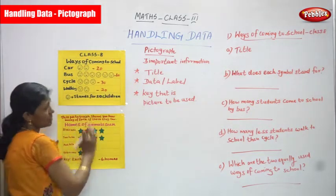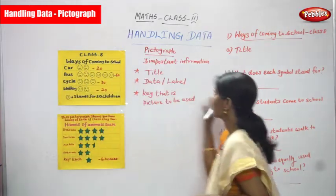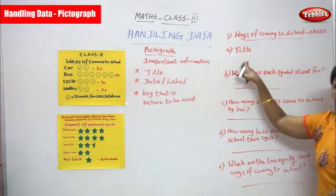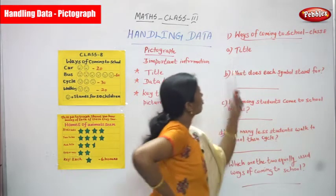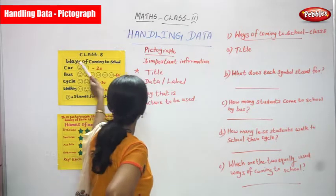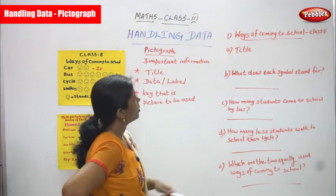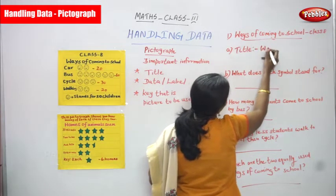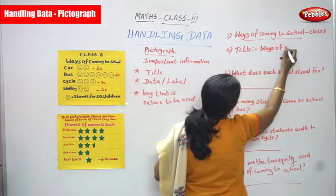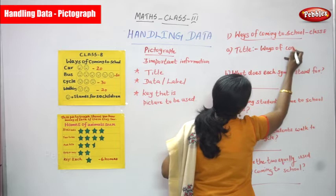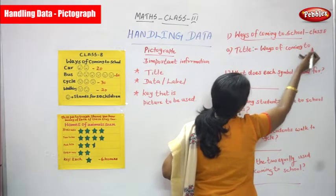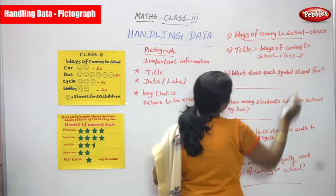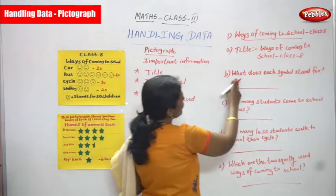The heading of this pictograph is 'Way of Coming to School, Class 8.' They ask the title, so the answer is: the title of this pictograph is 'Ways of Coming to School, Class 8.'